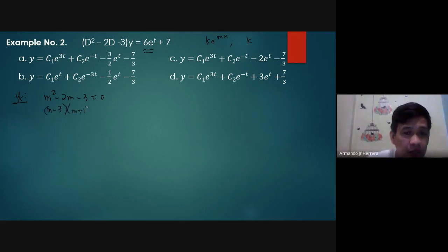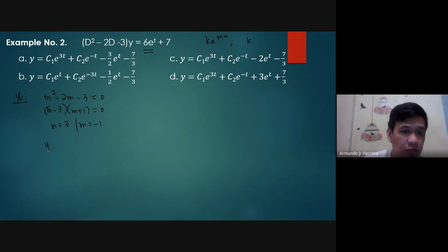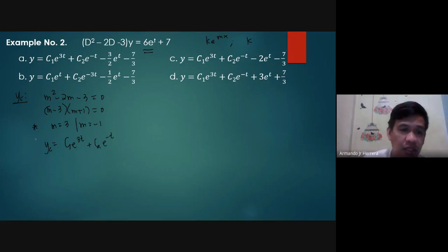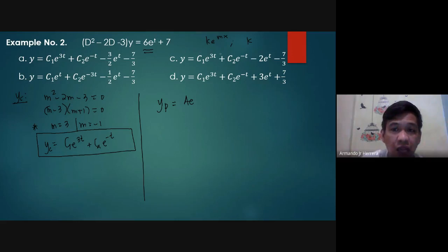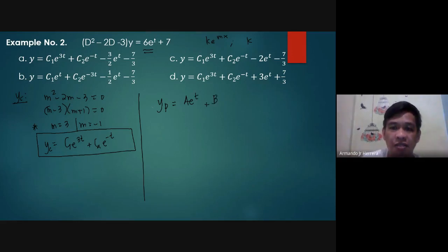With distinct roots m equals 3 and m equals negative 1, yc equals c1e to the 3t plus c2e to the negative t. For yp, since the right side is a combination of an exponential and a constant, the trial solution is yp equals ae to the t plus b.